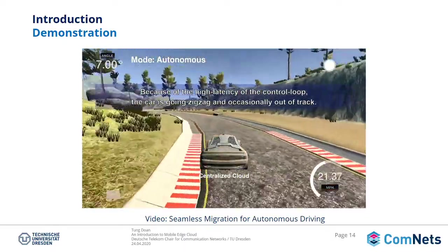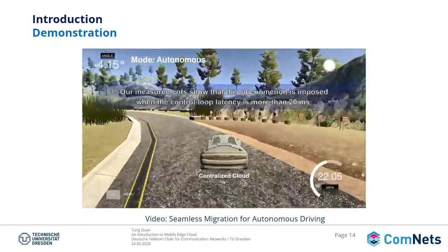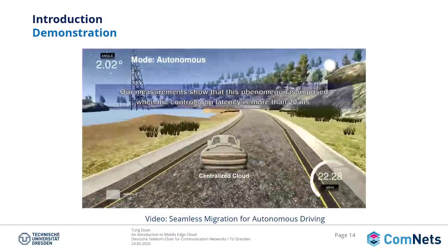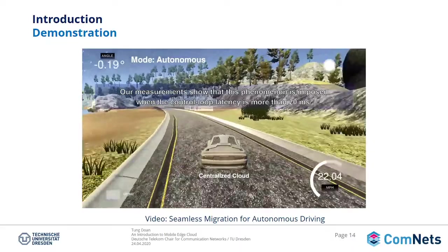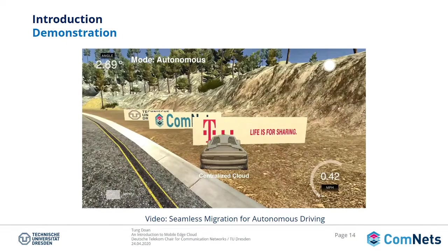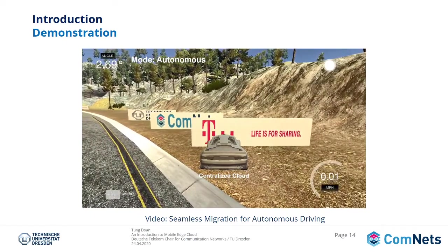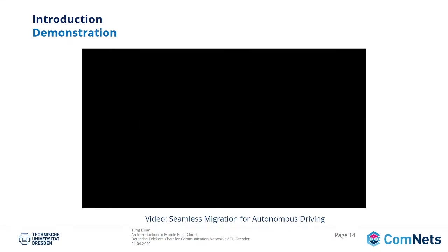The impact is very clear. With mobile cloud computing, the control loop latency is more than 20 milliseconds, and finally the car got into an accident. This is the demonstration of mobile edge cloud for the autonomous driving use case.